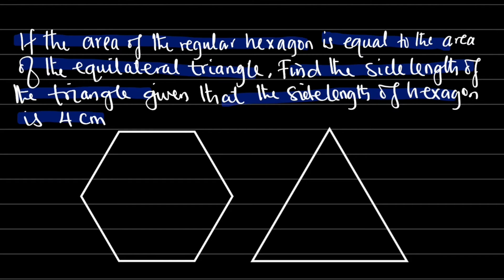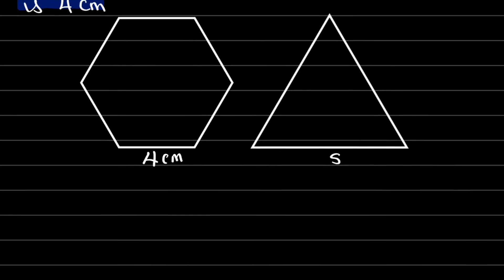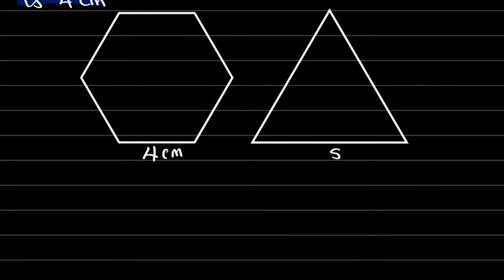A shape is said to be regular if all its sides are equal to one another. Let us start with this regular hexagon — it has 4 cm around. We are not given the side length of the triangle, but we are asked to find it, given that the two shapes have the same area. So let us denote the side length of the triangle by s. Let us go ahead and find the area of this regular hexagon; in the end we can relate it to that of the triangle to find the side length. This is a special case because we have a particular formula to guide us.